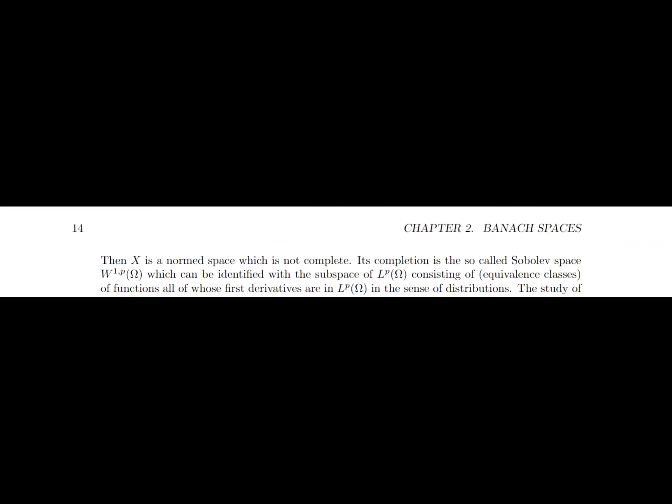The space C^1(Omega) for Omega in R^N, endowed with the norm involving partial derivatives, is a normed space but not complete. The completion of that space is what we call the Sobolev space, which you will study in various courses this year.